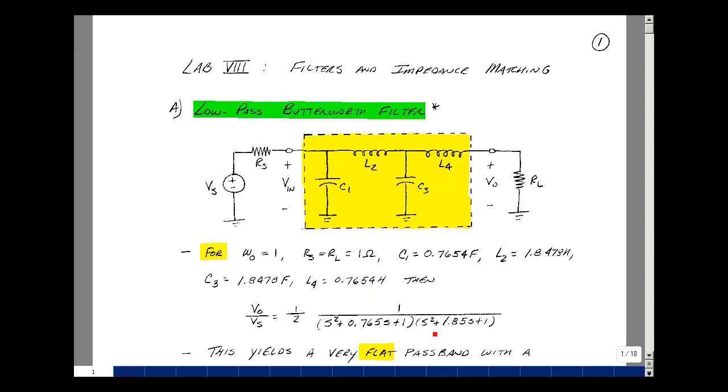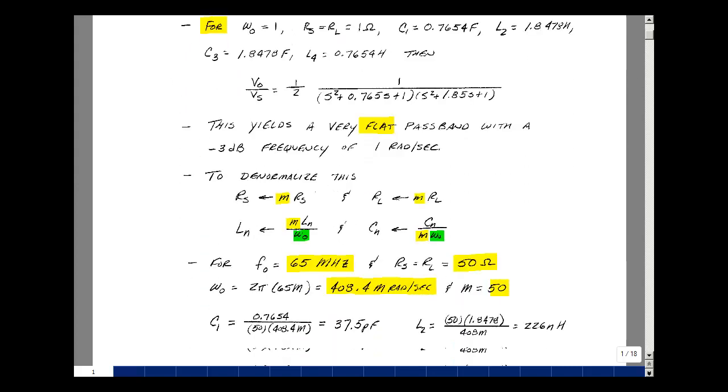When you plot its Bode plot, it has a flat passband and a 3 dB frequency of one radian per second. Now, in the e-book, we talked about denormalizing and frequency scaling, so let's do that.